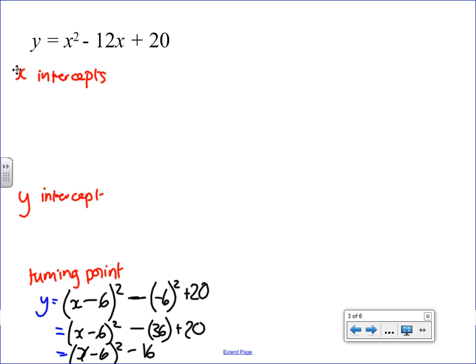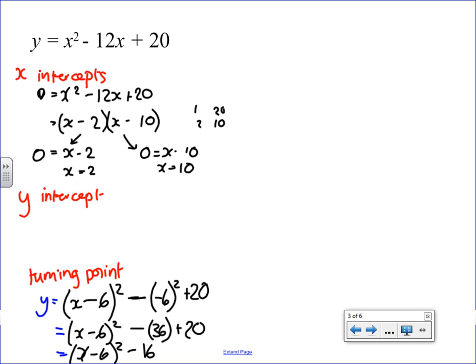Right, we get x-intercepts when y is 0, so we're then going to end up factorising. Ideally, if we can, yeah. So, let's be hopeful, try it. So, 2 and 10, minus 2, minus 10. This one is 0 equals x minus 2, and this one is 0 equals x minus 10. So, x is 2, or x is 10. Excellent.